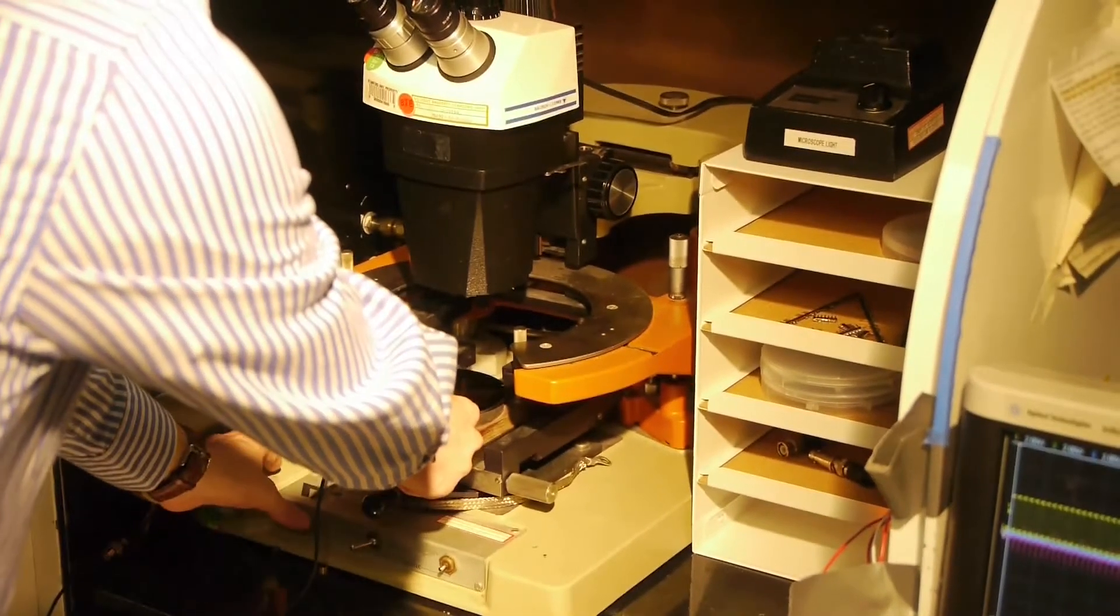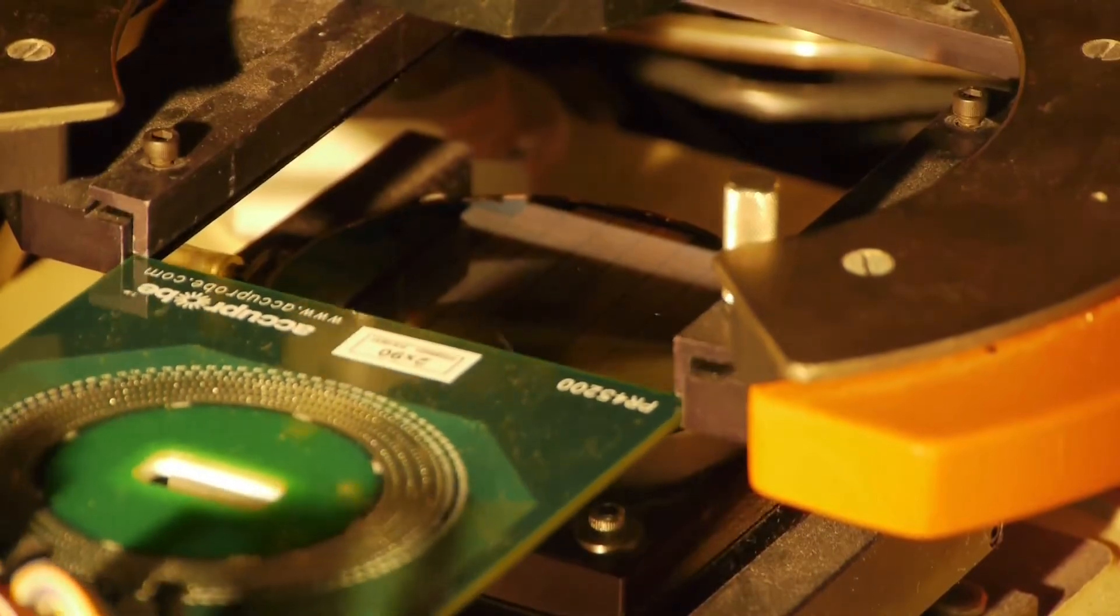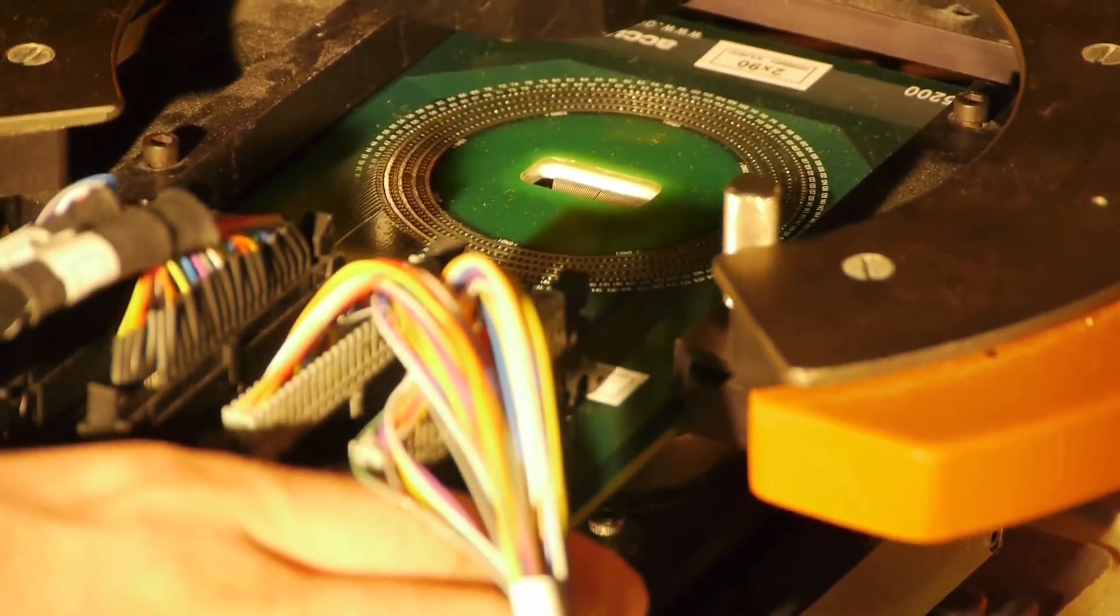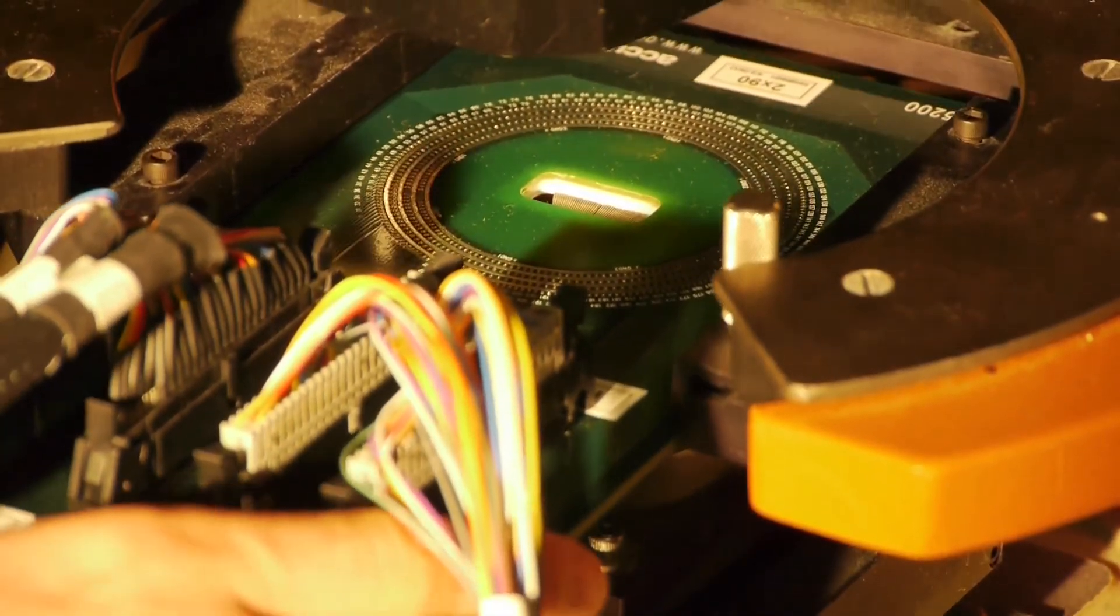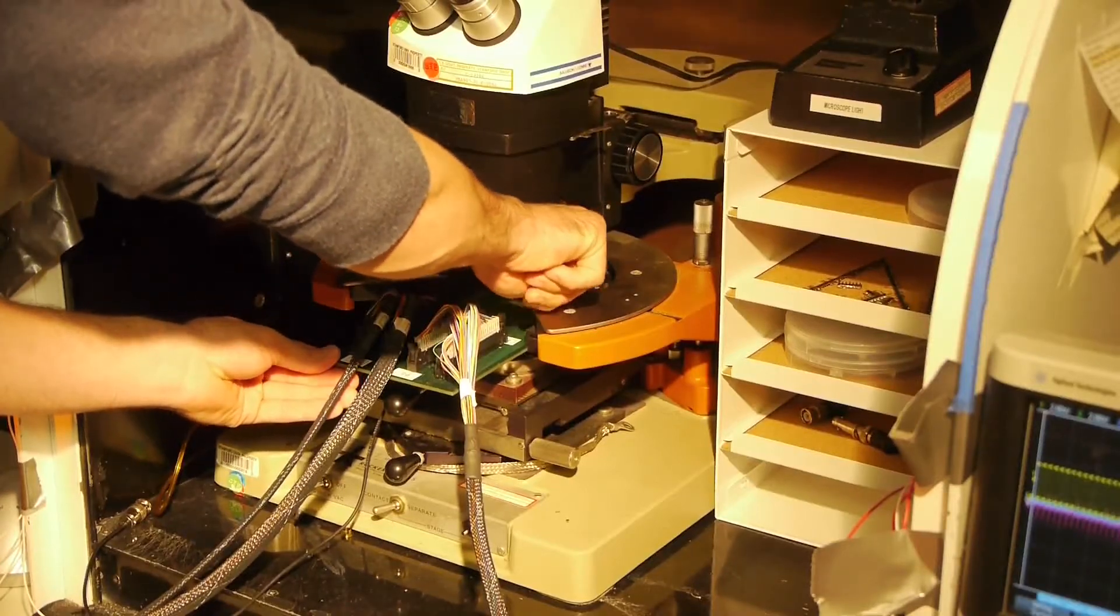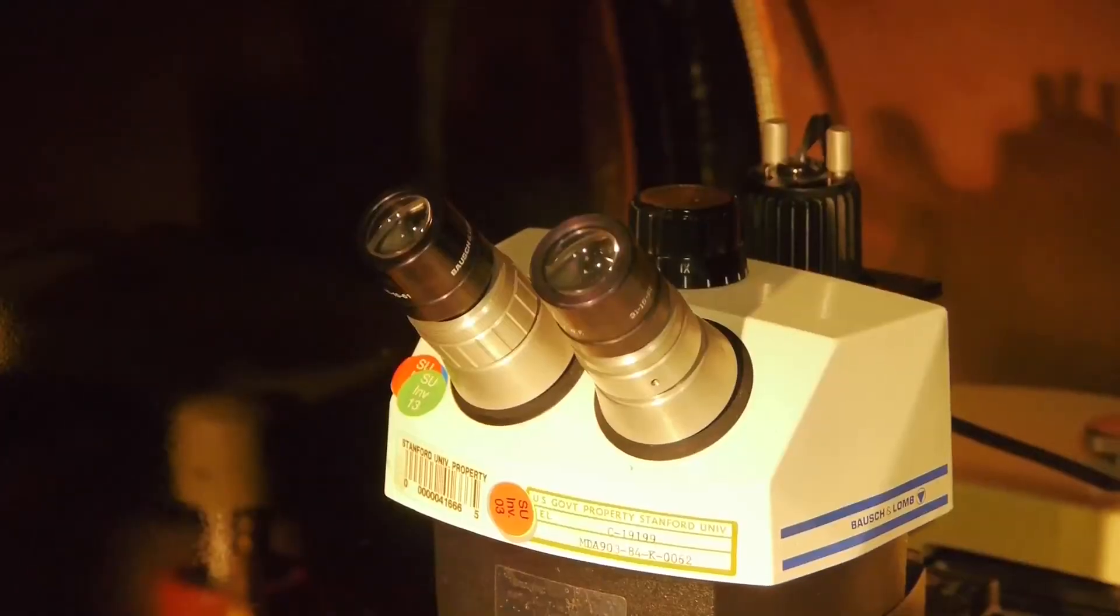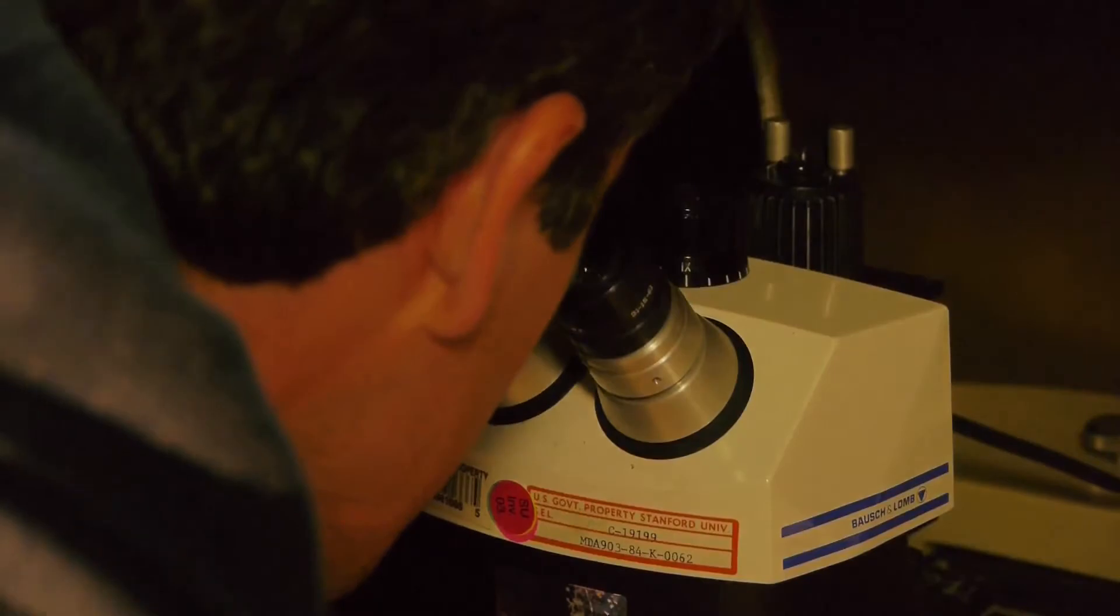We load the wafer into the probe station and hook it up to Sasha. The circuit that we've built is a capacitive sensor interface, which is basically a circuit which converts the value of a capacitive sensor into a digital output for a processor to read.